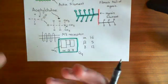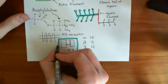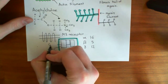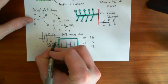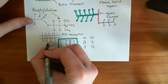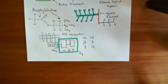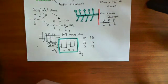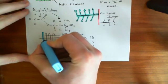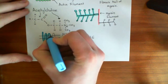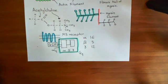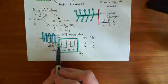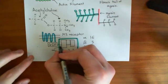Heterotrimeric G-proteins have both an on and an off state. When they are in their off state, the alpha subunit is bound to GDP — guanosine diphosphate. To turn them into their on state, you need to remove that guanosine diphosphate and replace it with a guanosine triphosphate. That's where the M3 receptor is going to come in. When acetylcholine binds to the M3 receptor, the M3 receptor is going to gain catalytic activity, and the reaction it's going to catalyze is the breaking off of this GDP molecule from the alpha-Q subunit.